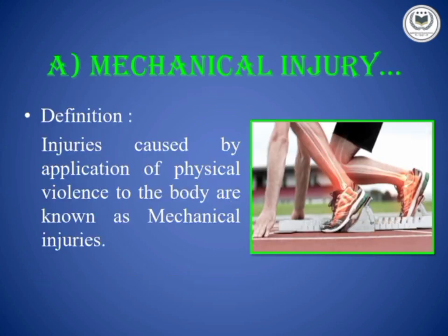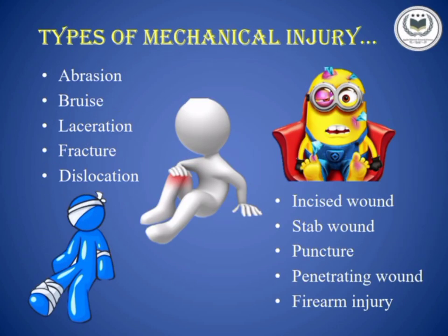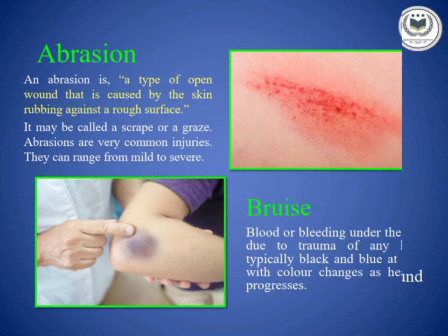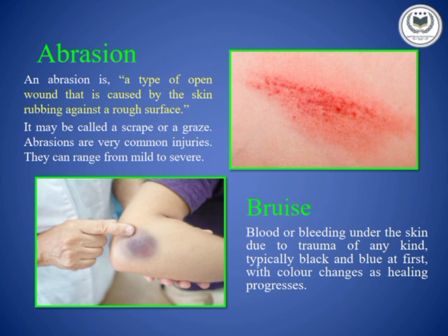What is mechanical injury? These are injuries caused by physical violence which tend to cause loss of natural continuity of any tissue of a living body. The types of mechanical injuries are abrasion, bruise, laceration, fracture, dislocation, incised wound, stab wound, puncture wound, penetrating wound, and firearm injury. Now let's see them one by one.